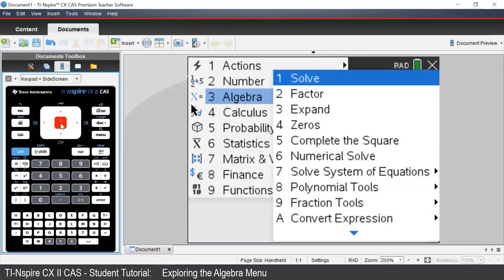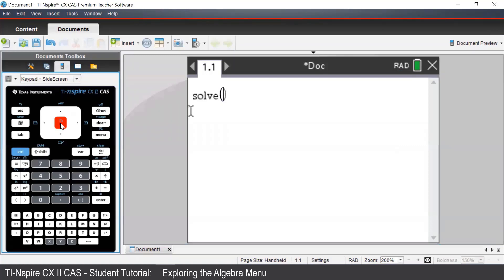In this video, we will look at the first five commands and begin by selecting solve. Once we select solve, we need to type in our equation. We'll look at solving 3x minus 2 equals 7.